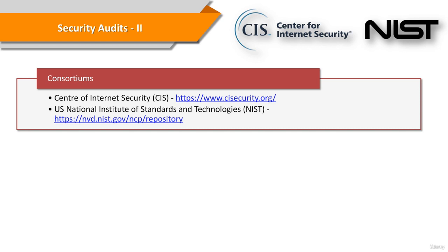NIST, the National Institute of Standards and Technology, is a physical sciences laboratory as well as a non-regulatory agency of the United States Department of Commerce. Its mission is to promote innovation and industrial competitiveness. If you visit their website, you'll find the National Checklist Program Repository of their National Vulnerability Database Program. They have a wide range of up-to-date checklists.